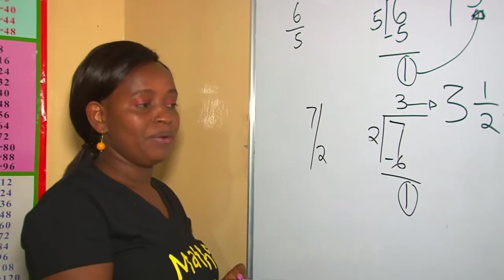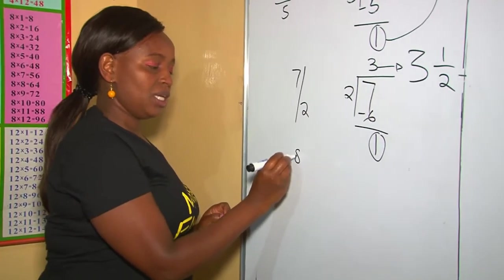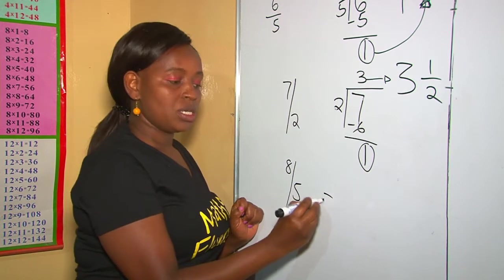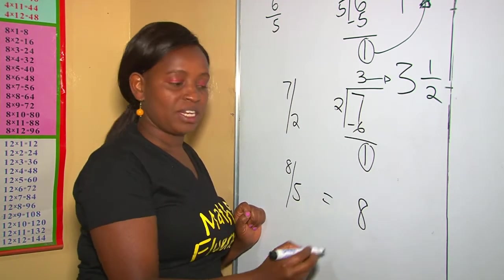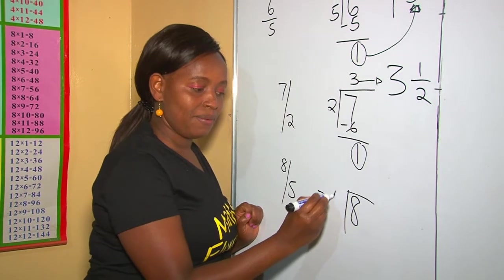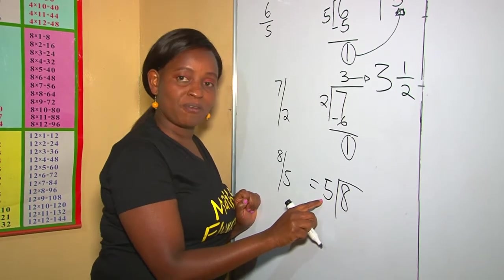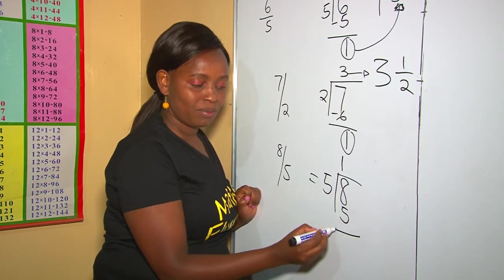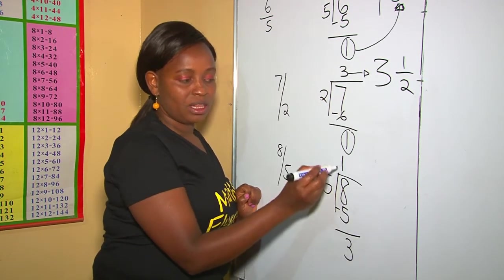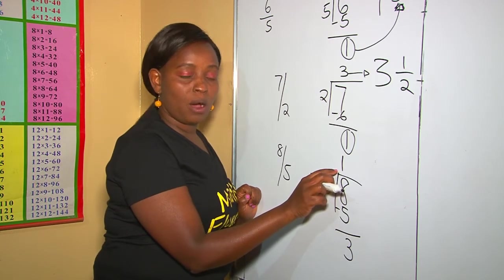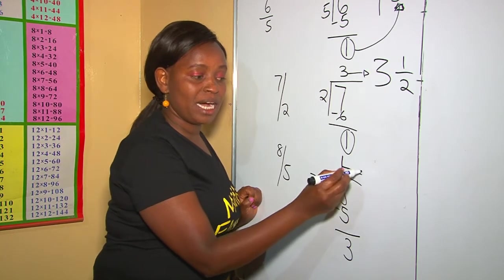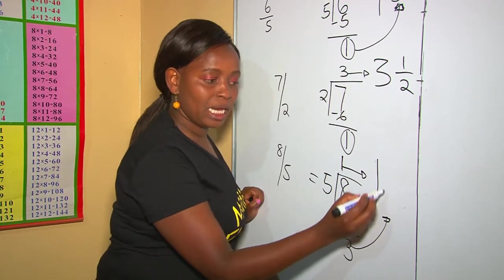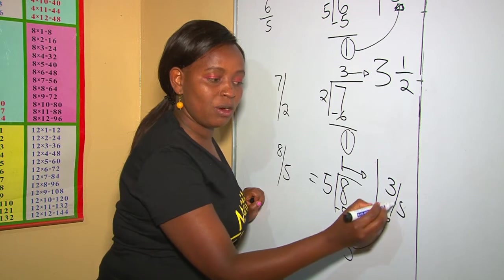Another example: 8 over 5. Using long division, 8 is our dividend and 5 is our divisor. 8 divided by 5 is 1 because of 5. 8 take away 5 is 3. Therefore, our quotient here becomes our whole number, and our remainder takes up the fraction part as 3 out of 5.